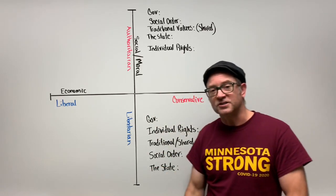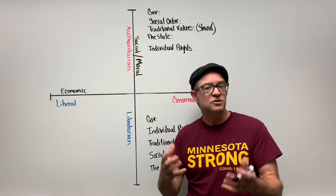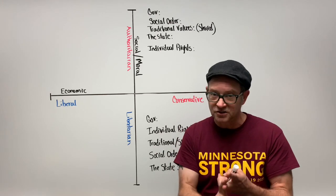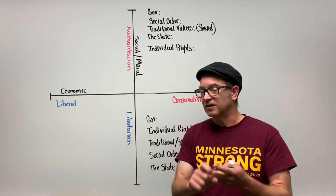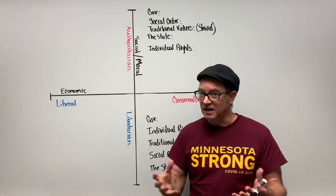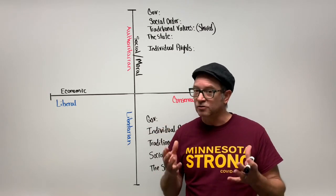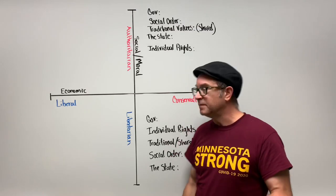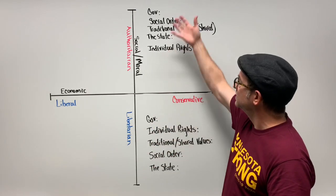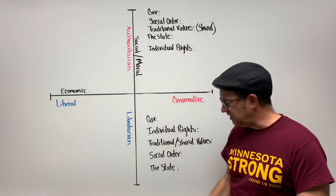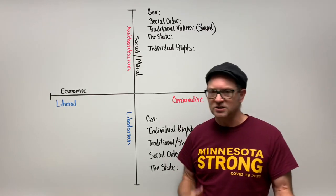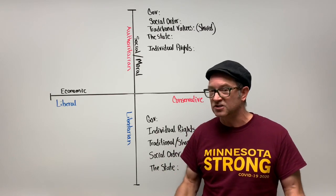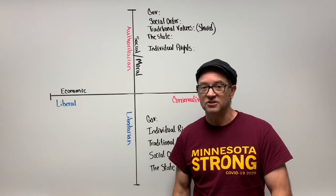Finally, we have individual rights and liberties — your freedom of speech, freedom to practice your religion, freedom from unlawful search and seizure. As we go through the definitions of authoritarian and libertarian, we'll assign pluses and minuses to give a basic visual understanding of how these two social ideologies differ.